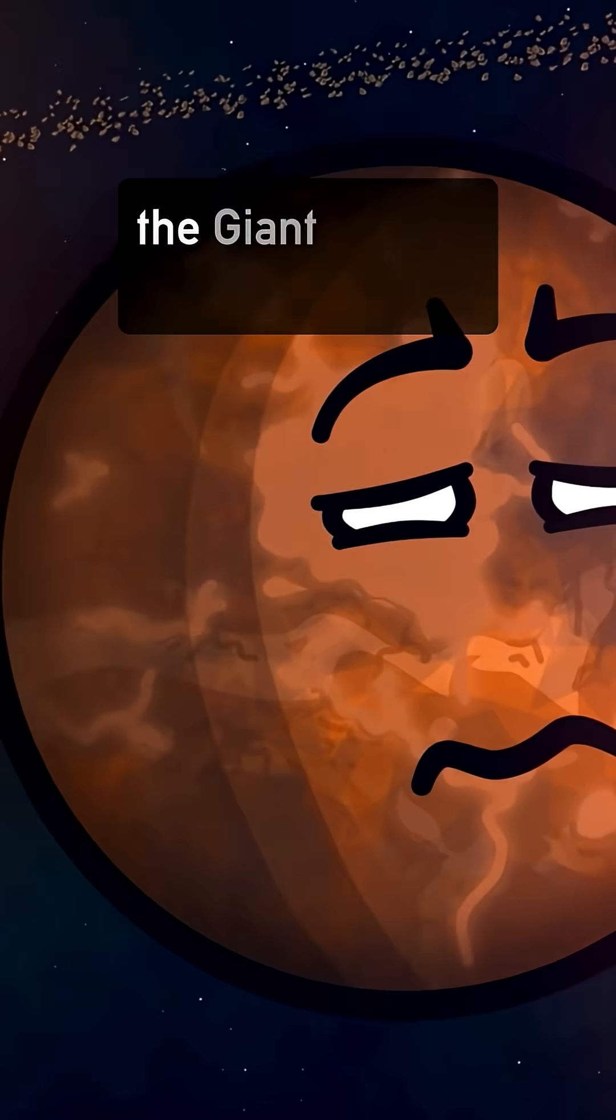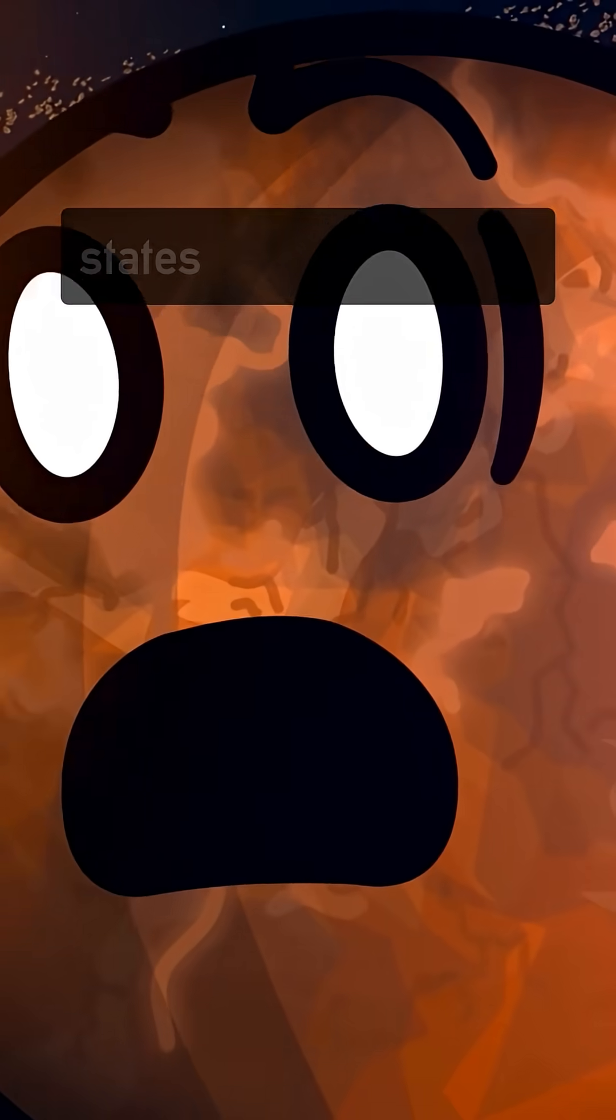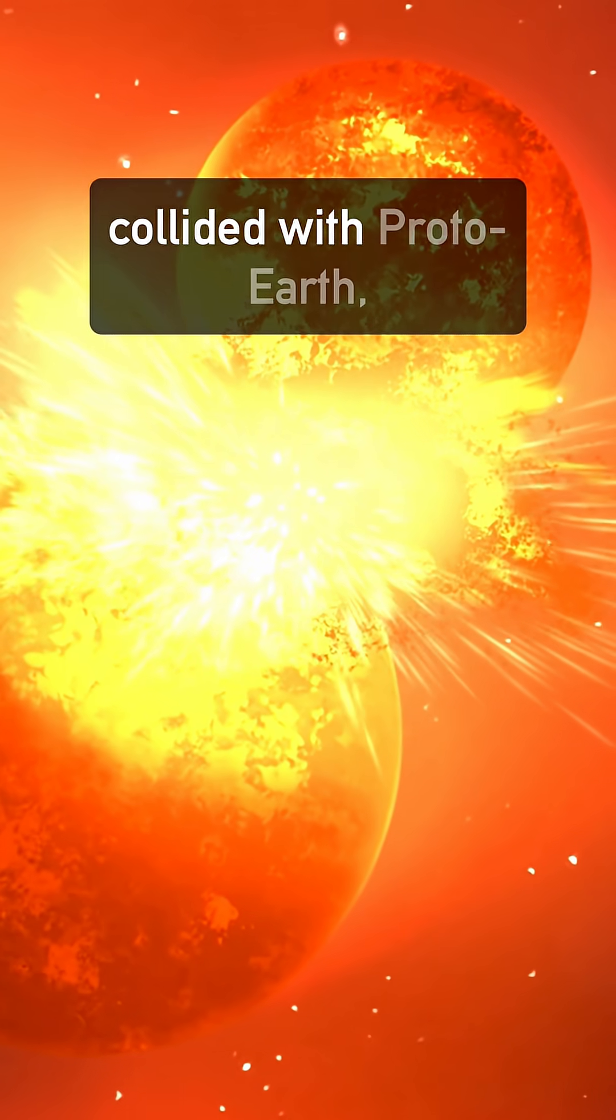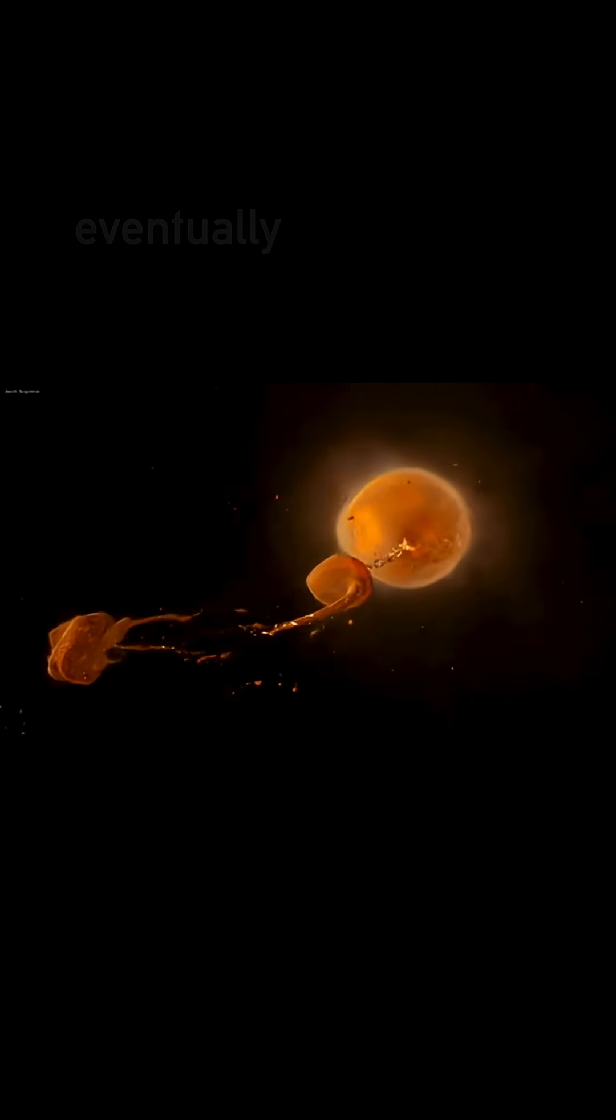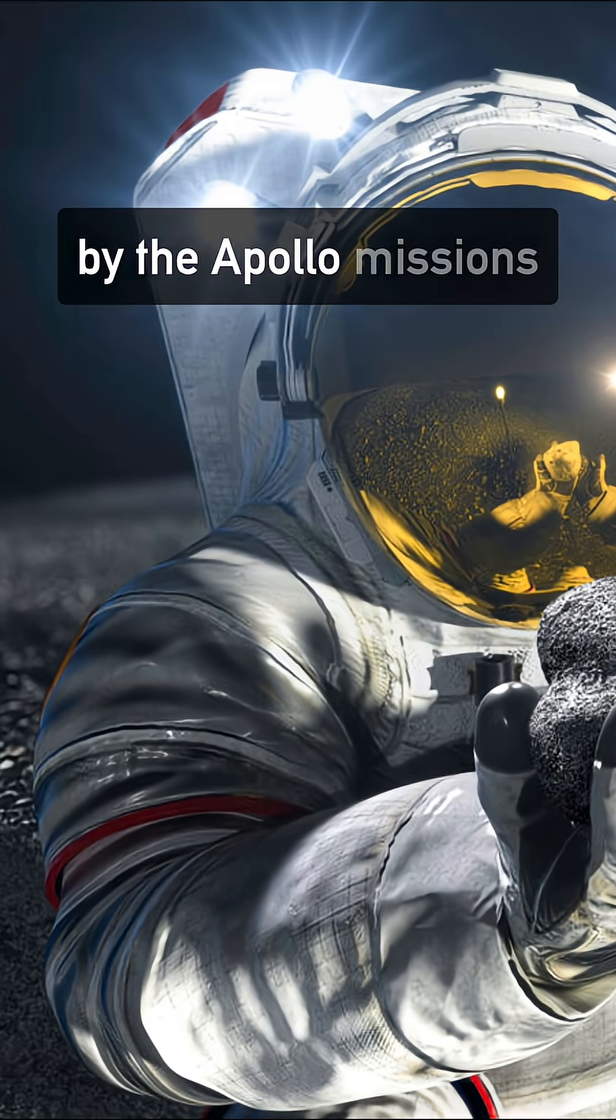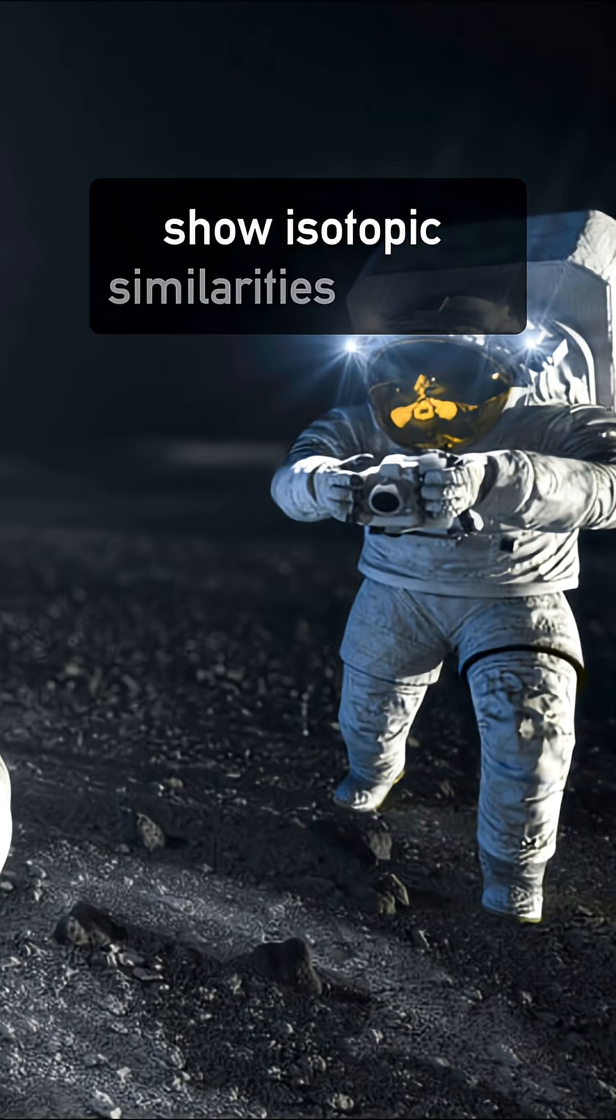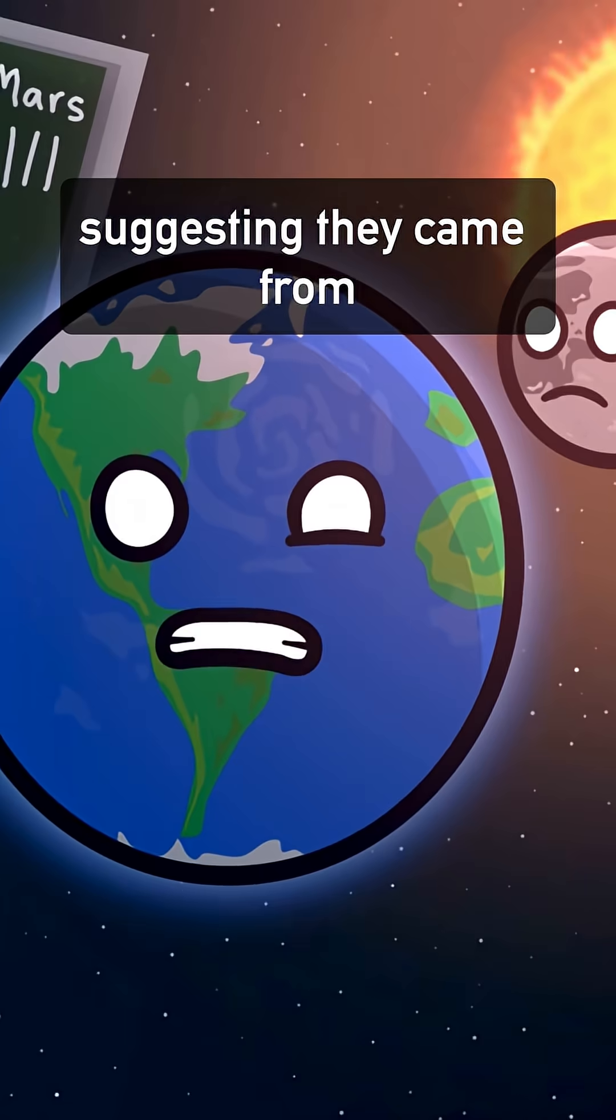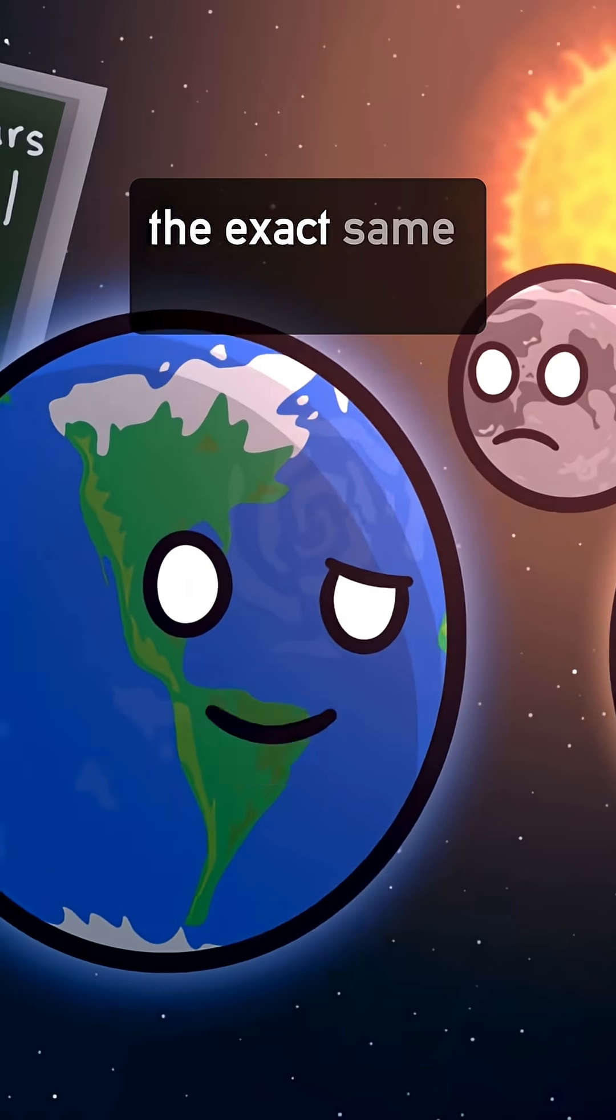First of all, the giant impact hypothesis states that when Theia collided with Proto-Earth, the resulting debris eventually became the Earth's moon. And moon rocks brought back by the Apollo missions show isotopic similarities to Earth, suggesting they came from the exact same material.